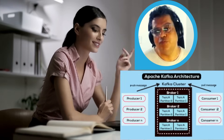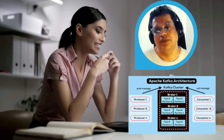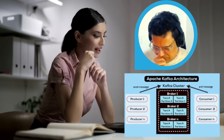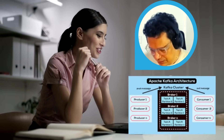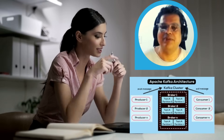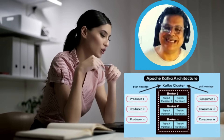Let's start with a brief introduction and architecture components of Kafka. Apache Kafka is an open source stream processing software platform developed by LinkedIn and donated to the Apache Software Foundation. It is written mainly in Scala and Java. At its heart, Kafka is a distributed event streaming platform capable of handling trillions of events a day.